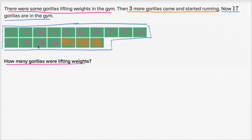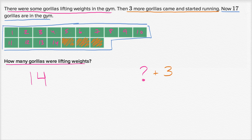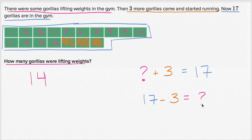So how many gorillas were lifting weights to begin with? Well, that's 14. There's another way you could think about this: there were some number of gorillas lifting weights, then three more gorillas walked in, and now there are 17. So you could say something plus three is 17. Or 17 minus three gives you how many you originally had.